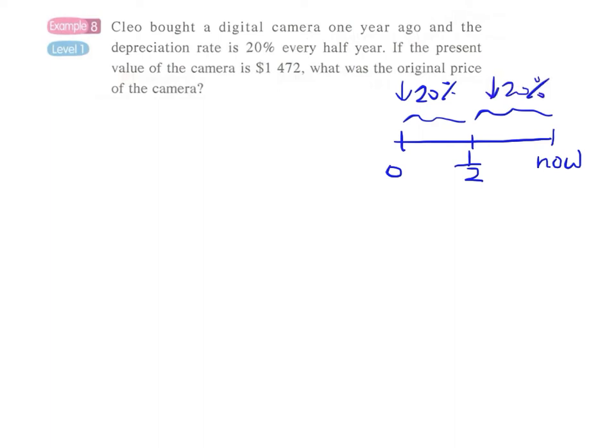In one year there are two times of 20 percent drop of the value of the camera. And if the present value of the camera is $1472, what is the original value of the camera?